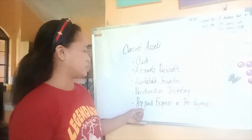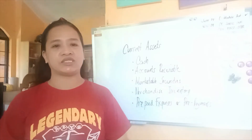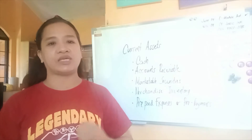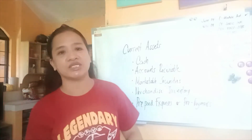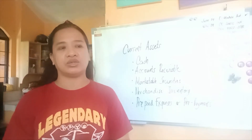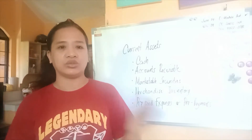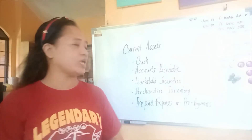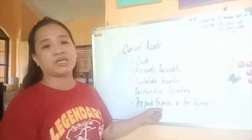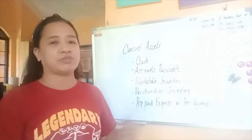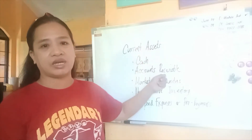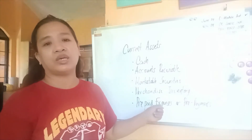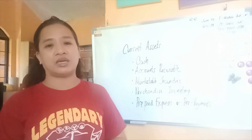Prepaid expense or prepayments are those expenses that are not yet used, which is why they are part of the asset. For example, we pay rent in advance for one year — it is considered an asset because it is not yet used. But upon usage, for example after using two months of rent, we debit rent expense and credit prepaid expense. The original entry of prepaid expense is debit prepaid expense and credit cash, because we already paid for it. After using it, we credit prepaid expense and debit rent expense.